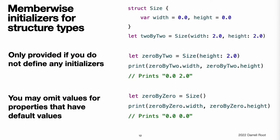MemberWise initializers for structure types. Structure types automatically receive a memberwise initializer if they do not define any of their own custom initializers. Unlike a default initializer, the structure receives a memberwise initializer even if it has stored properties that do not have default values. The memberwise initializer is a shorthand way to initialize the member properties of a new structure instance. This example defines a structure called Size with two properties called width and height. Both properties are inferred to be of type Double by assigning a default value of 0.0.